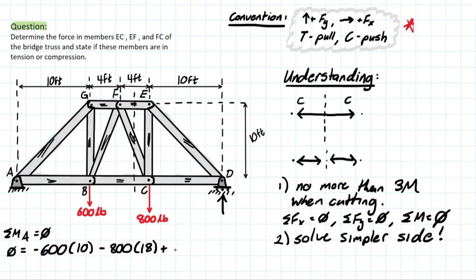And we have D-reaction, Dy, which is going to be assumed in the opposite direction. And that's going to be 28 feet away. And solving this, we're going to be left with Dy equal to 728.6 pounds.